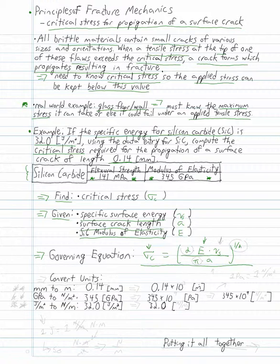That's the equation we're going to want to use because we're looking for this critical stress. We're given this value, this value, and this value. And the 2, the pi, and the one-half power are all just constants. So we'd have everything we need to know.